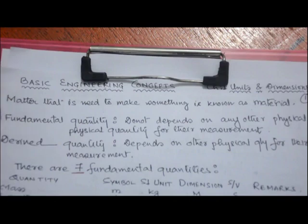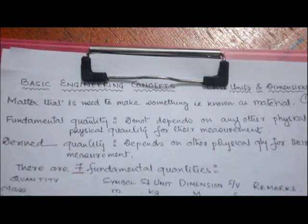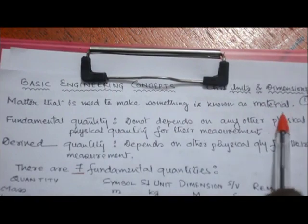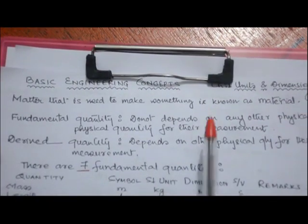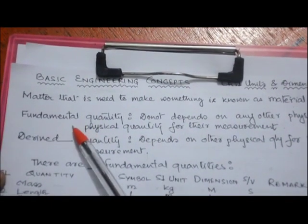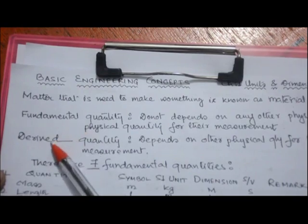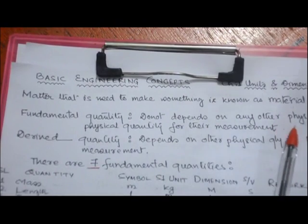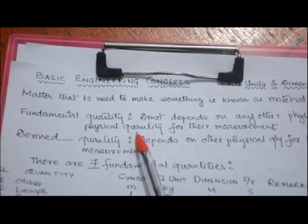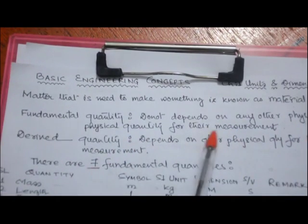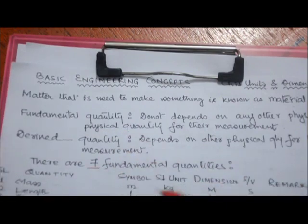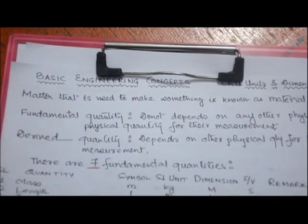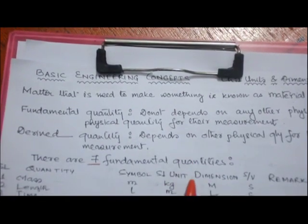First, what is material? Matter that is used to make something is known as material. There are two types of quantities: fundamental quantities and derived quantities. Fundamental quantities do not depend on any other physical quantity for their measurement, while derived quantities depend on other physical quantities — either fundamental or derived — for their measurement.